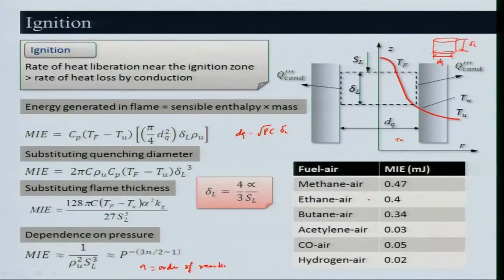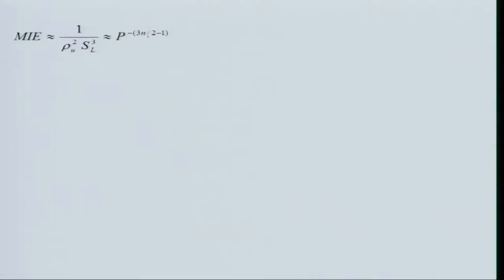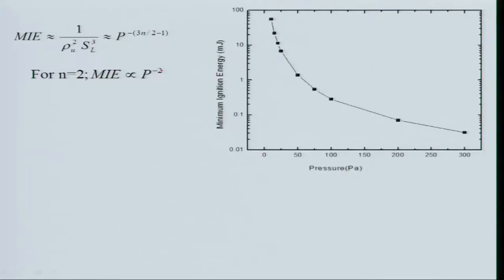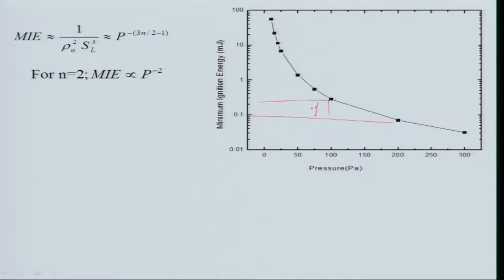If the order of reaction is 2, the exponent becomes 3(2)/2 − 1 = 2, meaning M_i ∝ P^−2 — a very strong dependence on pressure. Plotting minimum ignition energy versus pressure: at around 100 atmospheres some amount of energy is needed, but as pressure decreases the required ignition energy becomes very high, with slope going nearly vertical. At very high pressures (say 100 to 200 atm) the difference is small.